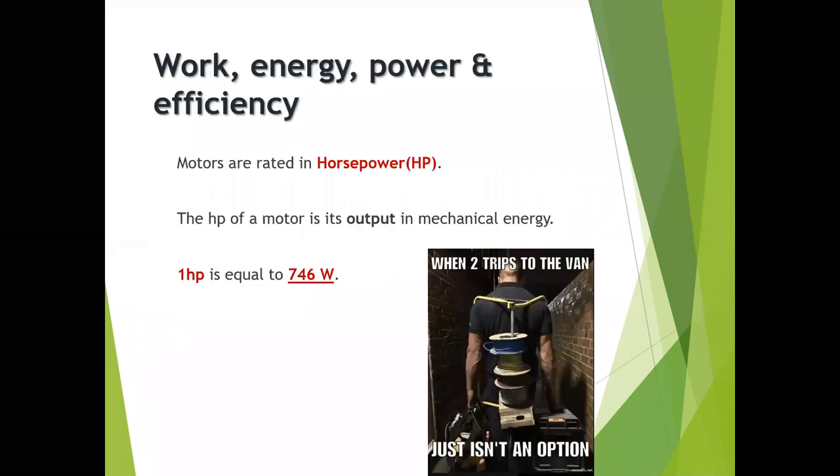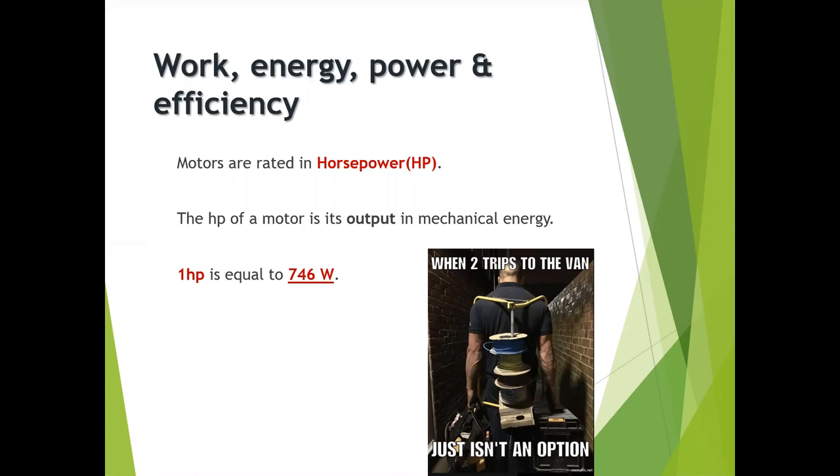Now we get on to efficiency. Motors are rated in horsepower and this is really important for you to note because you have to memorize how many watts per horsepower, this magical number of 746 you got to memorize. I promise you somewhere along the line you will have to know this. The horsepower of a motor, and this is also vital for you to know, is the output.